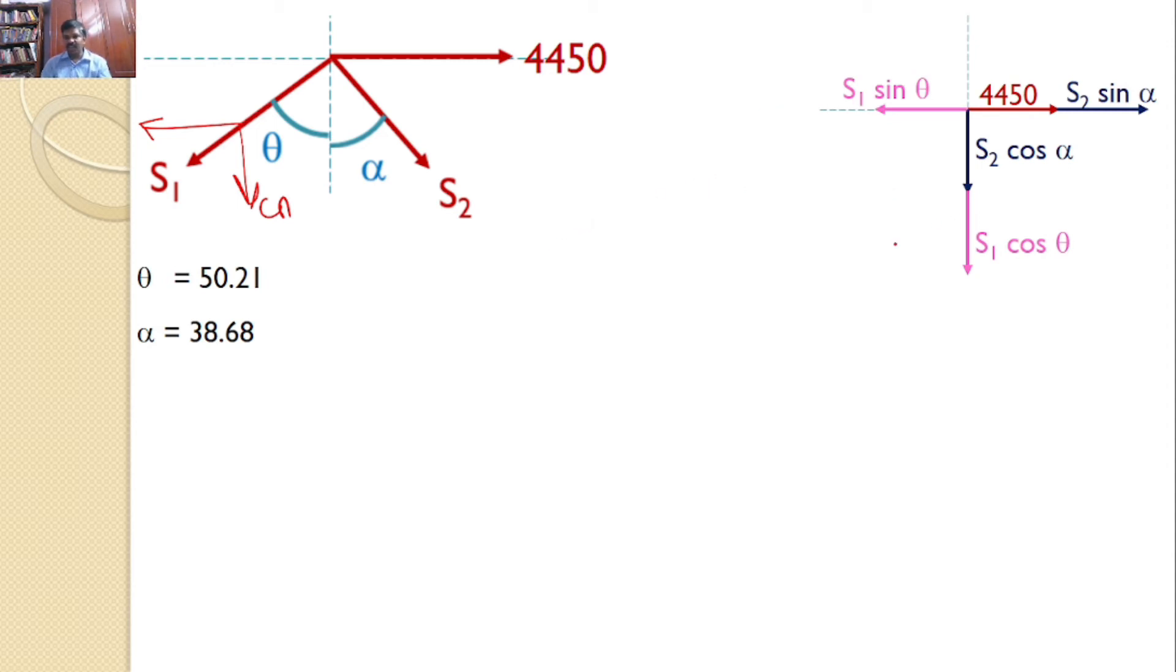Let us apply equilibrium condition sigma FY is equal to 0. There are two forces. Both the force acts in the downward direction. So, you can write S2 cos alpha plus S1 cos theta is equal to 0. And you can substitute these values here. So, S2 cos 38.68 is equal to minus S1 cos 50.21. And upon simplification, you will get S2 is equal to minus 0.82 into S1.